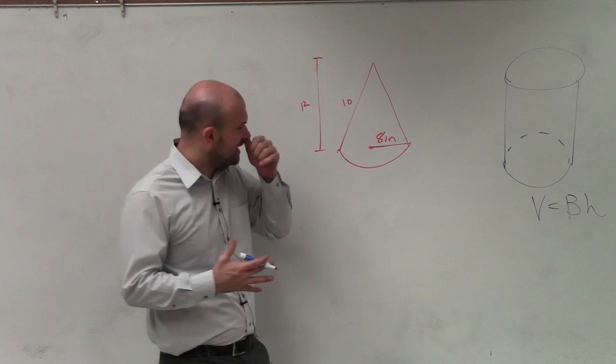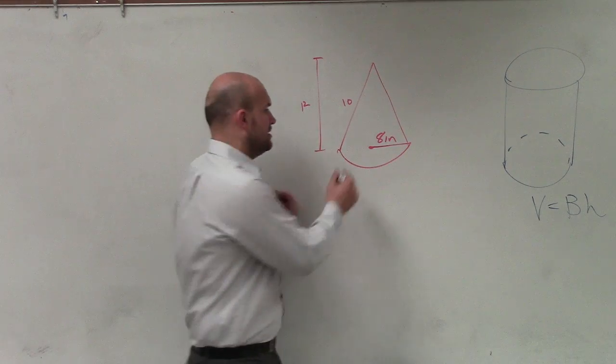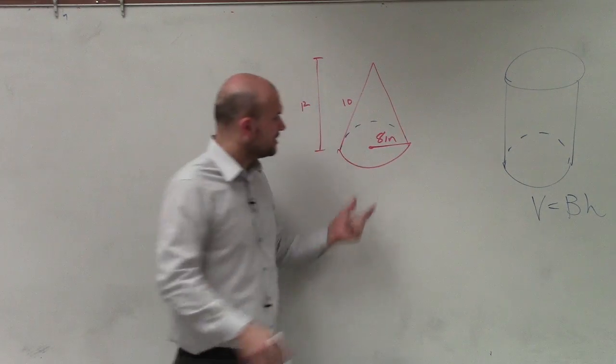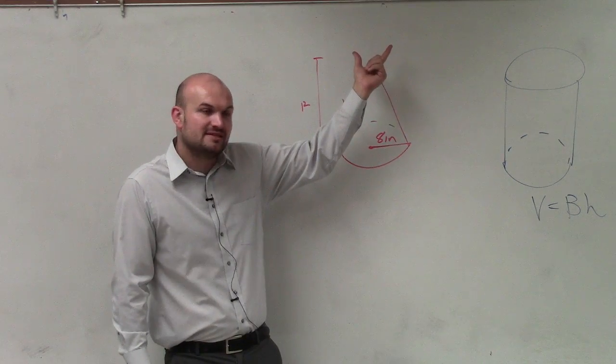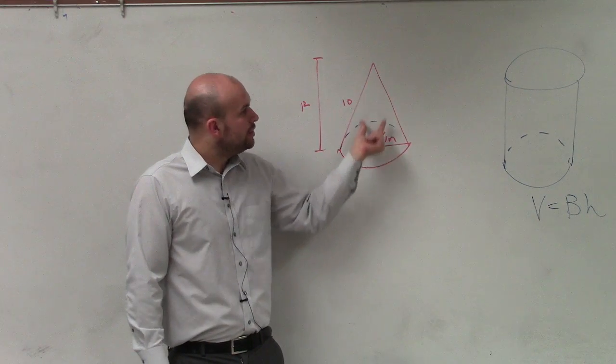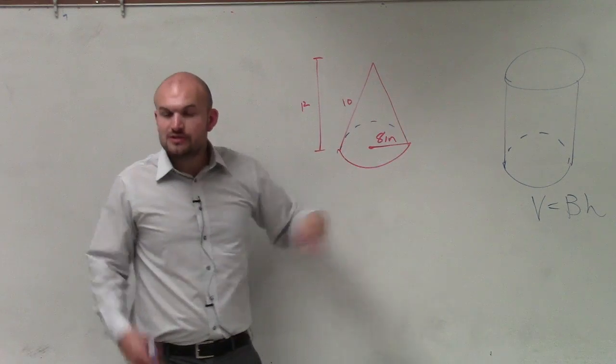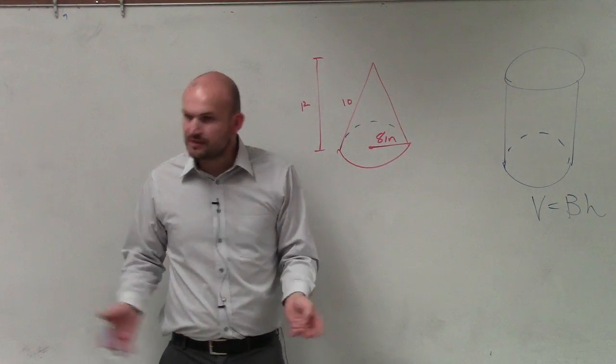Now, what we're looking at is we're not looking at a prism. Because if you guys look at this, instead of the base being extended all the way to the top and having the same shape, it now converges to a single point. So this is what we call a cone, which you guys should be familiar with.